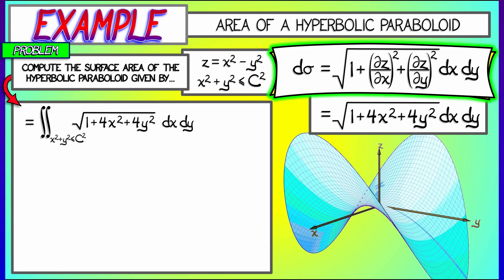So now, all we have to do is integrate this over the disk in the xy plane of radius c. This is really clearly calling out for polar coordinates. If I use the fact that r squared is x squared plus y squared, then my integrand is square root of 1 plus 4r squared times r dr d theta, as r goes from 0 to c, and theta goes from 0 to 2 pi.